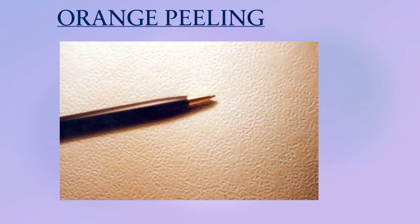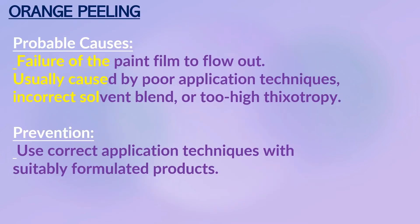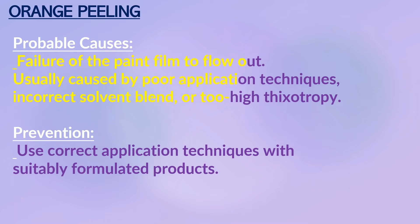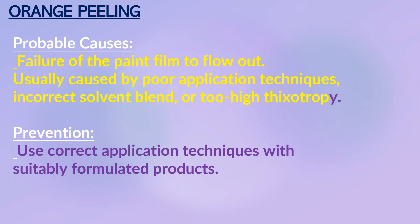Orange Peel: a uniform, pock-marked appearance, particularly of spray-applied coatings, in which the surface of the paint film resembles the skin of an orange. Probable causes: failure of the paint film to flow out, usually caused by poor application technique, incorrect solvent blend, or too high viscosity. Prevention: use correct application technique with suitably formulated products.